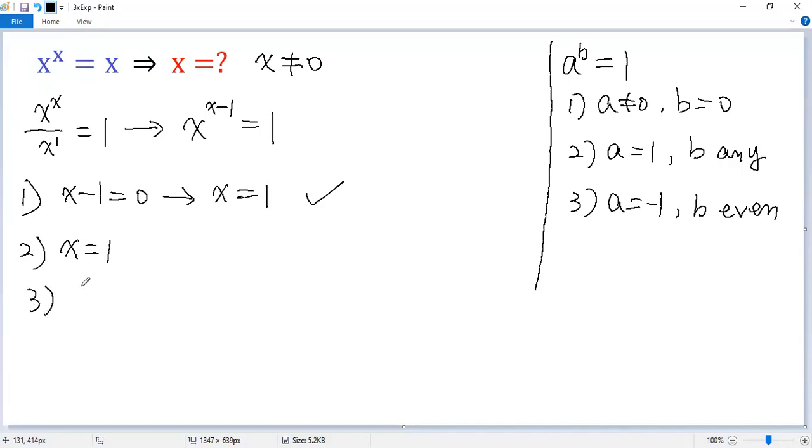Let's look at the last case. We let the base equals negative 1, so x equals negative 1. Let's see if the exponent is even or not. So x minus 1 equals negative 1 minus 1 equals negative 2.